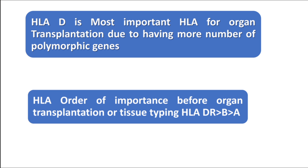The most polymorphic gene is HLA-D — MHC class 2 molecule has more polymorphic genes. While doing organ transplantation, HLA-D matching should be done first, particularly HLA-DR matching, followed by HLA-B and HLA-A matching. Since HLA molecules differ in every individual, we need to do HLA matching as much as possible during organ transplantation to reduce the chance of rejection.